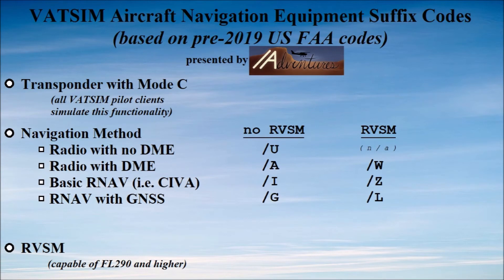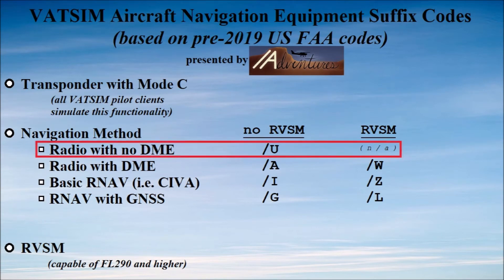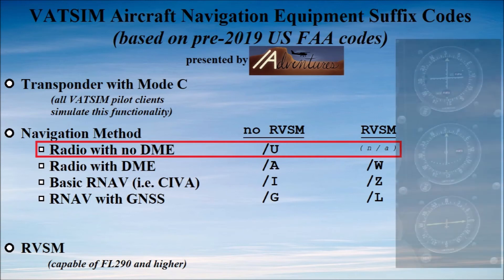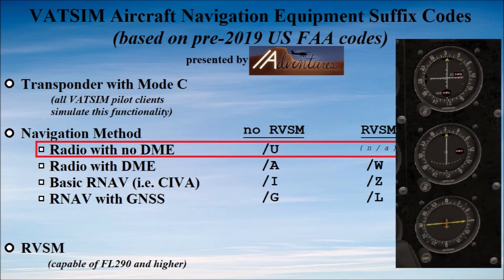So let's boil this table down into the seven remaining codes and talk about navigation methods. The first line, Radio Navigation Without DME, refers to having the ability to tune a non-directional beacon or a VOR station, but not having a way to tell how distant it is. You might have gauges that can point you in the right direction, but nothing counting down the mileage. This situation is pretty rare on VATSIM at this point, but some vintage planes — particularly vintage warbirds — might not have DME, and Slant Uniform is the code you'd use.